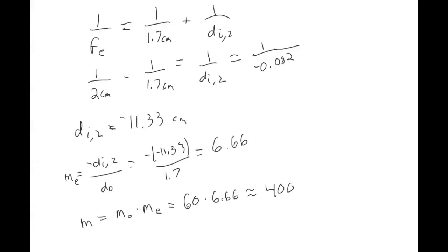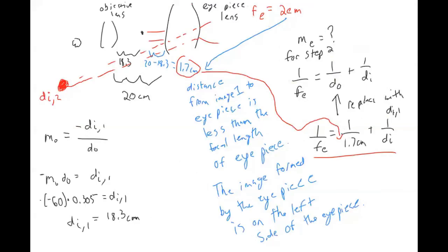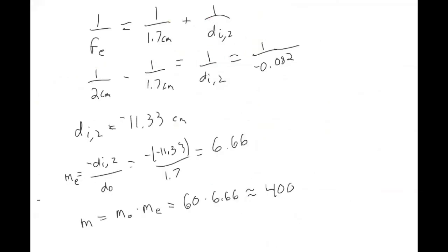This is the process for working with multi-lens systems. First, draw your picture. Then do the work for the first image — figure out where it lands and what its magnification is. When you deal with the second lens, pretend the image the first lens created is now your object. Figure out the distance from that first image to the second lens — that will be your object distance for the next equation. Then repeat the process again using the same equations with the appropriate values.